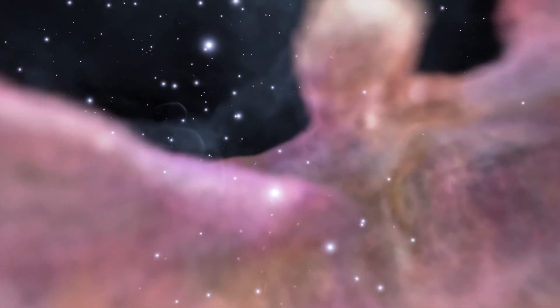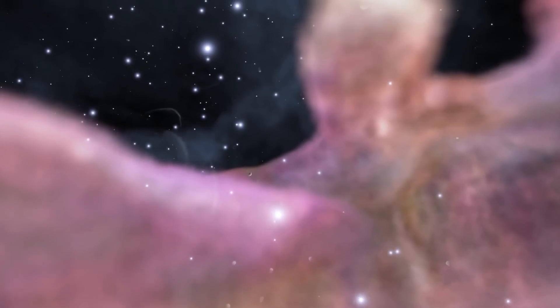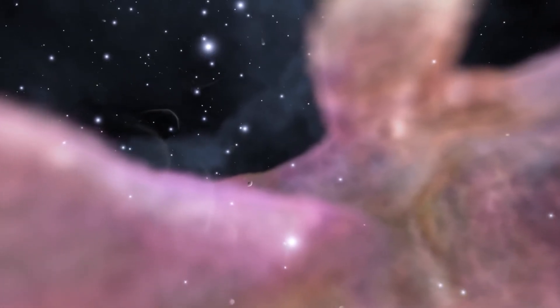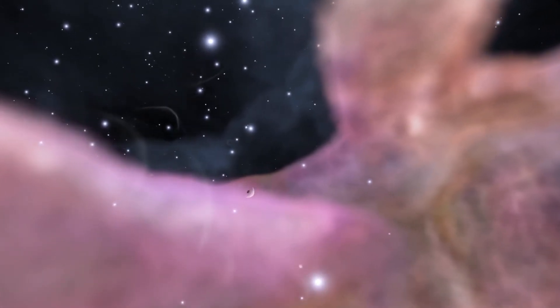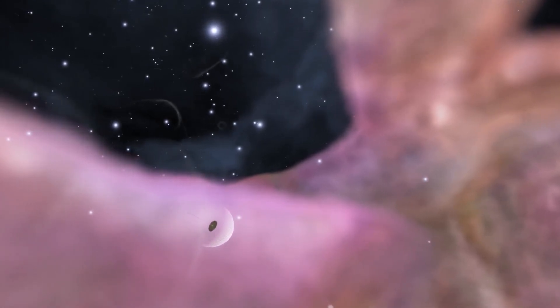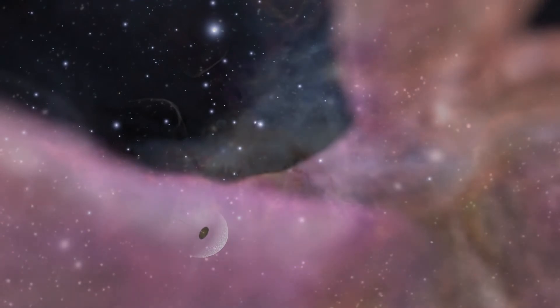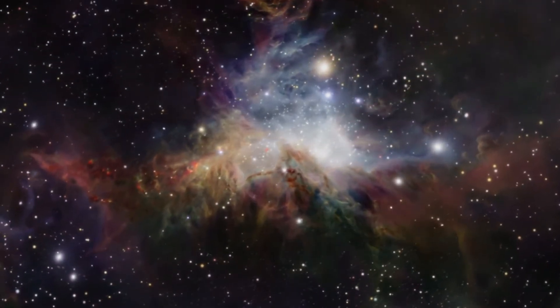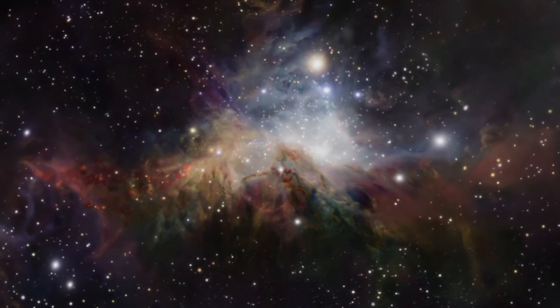By studying the Orion Nebula, Hubble made the stunning discovery that at least half of the stars in the region were surrounded by rotating disks of gas and dust, the raw materials necessary for the formation of planets.